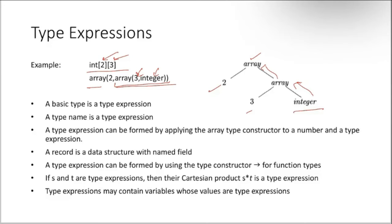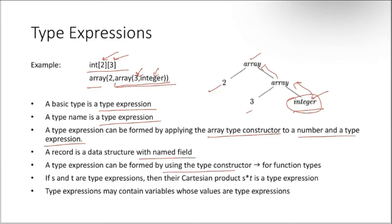A basic type is a type expression. A type name is also a type expression — for example, 'integer' is a type name and hence a type expression. A type expression can also be formed by applying the array type constructor to a number and a type expression. A record is a data structure with named fields. For function types, if s and t are type expressions, then their Cartesian product s * t is also a type expression.